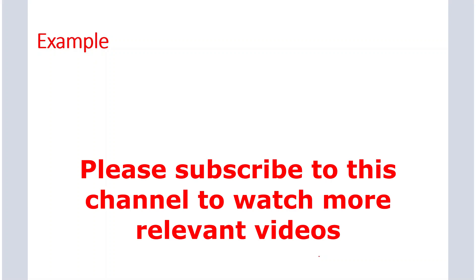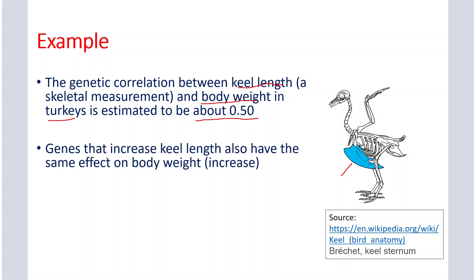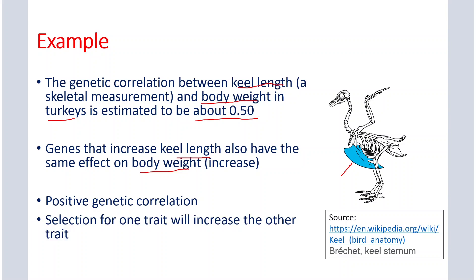Now we will see the example of genetic correlation. The genetic correlation between keel length — that is a skeletal measurement shown here — and body weight in turkeys is estimated to be 0.5. We can say that genes that increase keel length also increase body weight in turkeys, because there is a positive genetic correlation between keel length and body weight.